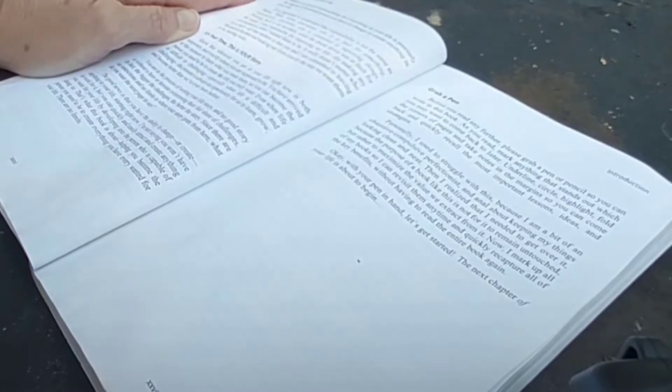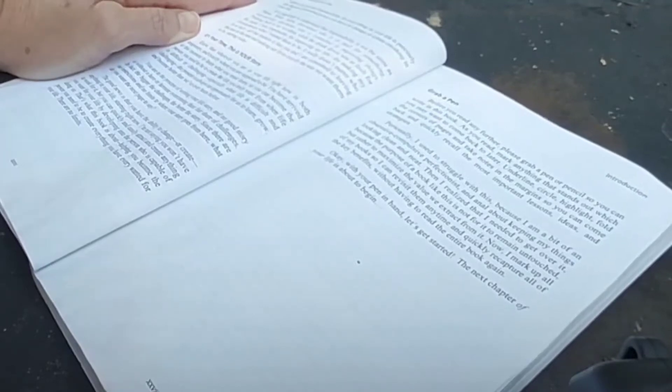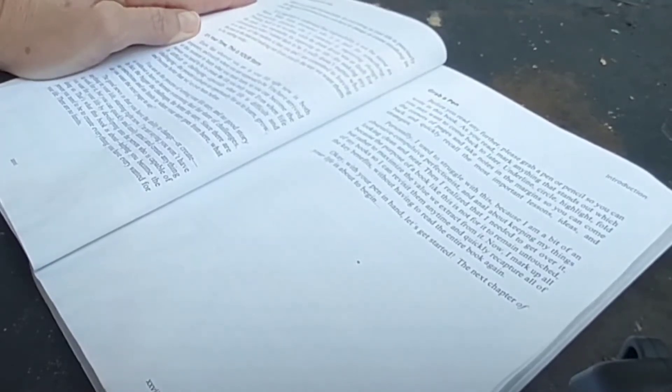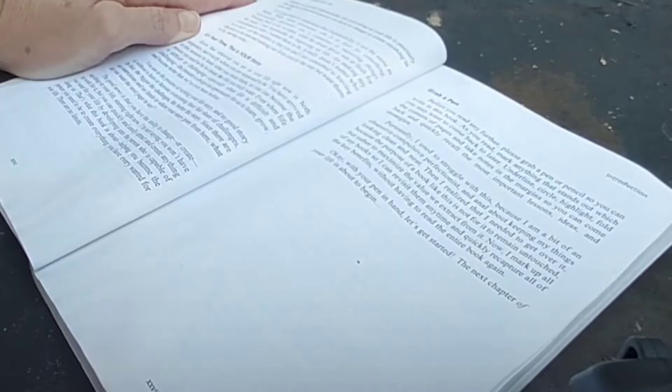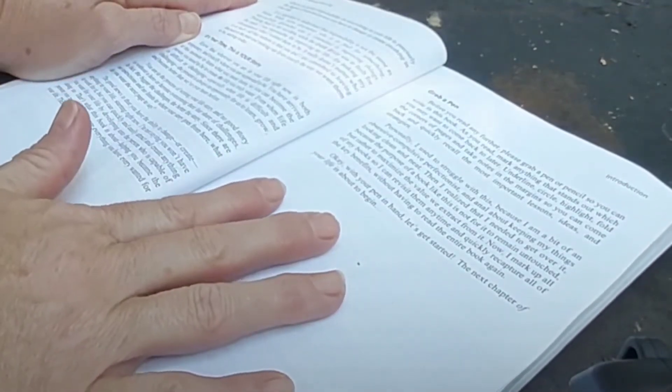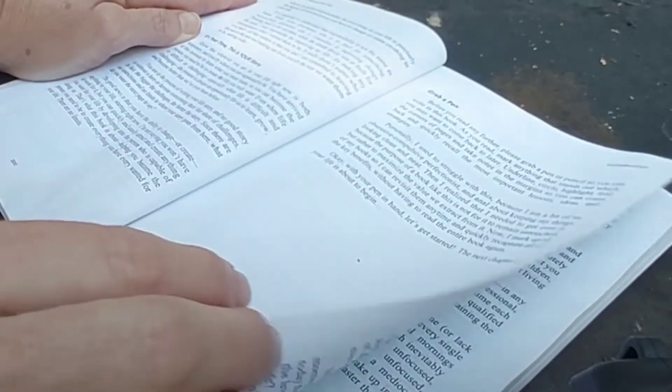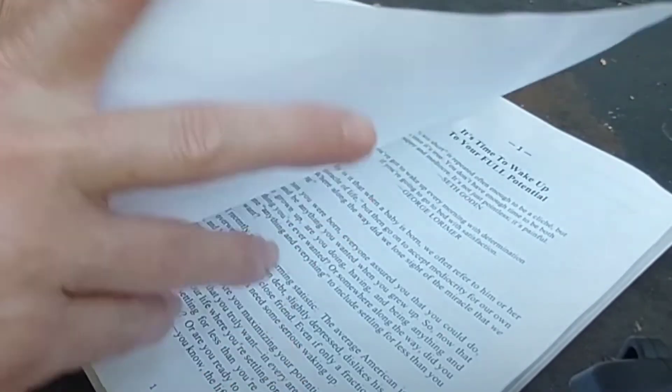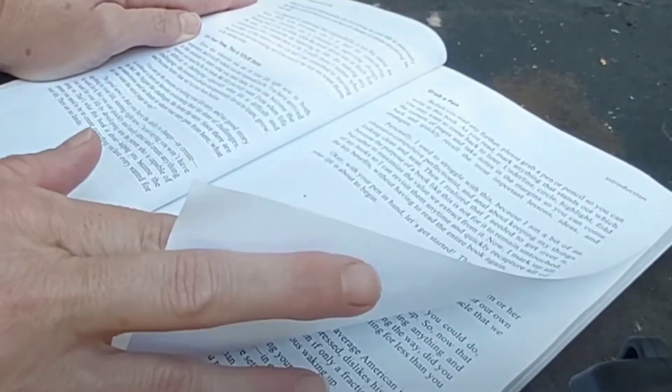Grab a pen. Before you read any further, please grab a pen or pencil so you can write in this book. As you read, mark anything that stands out, which you may want to come back to later. Underline, circle, highlight, fold the corners of the pages, and take notes in the margins so you can come back quickly, recall the most important lessons, ideas, and strategies. Okay, with your pen in hand, let's get started. The next chapter of your life is about to begin.